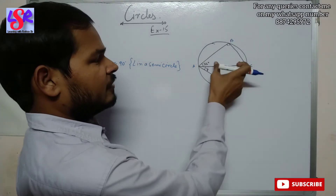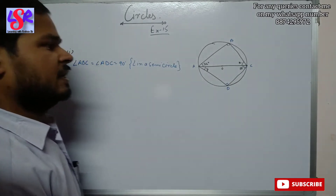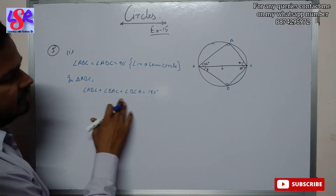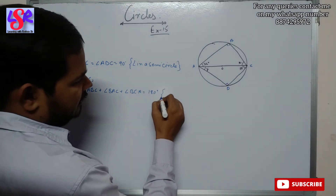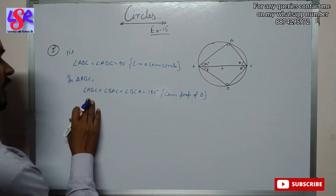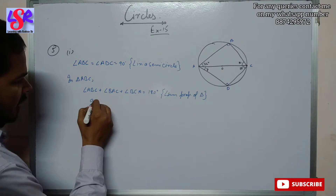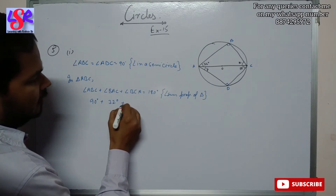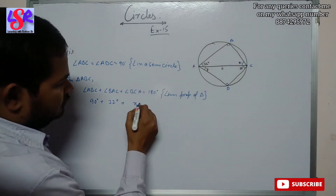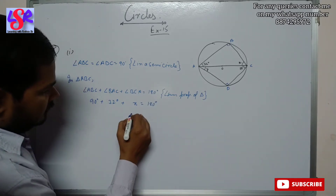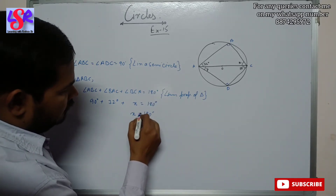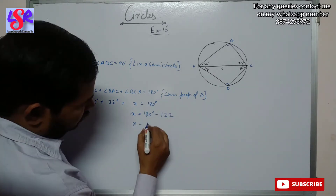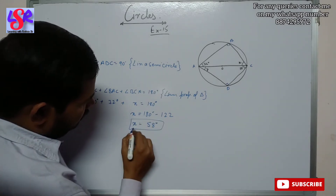In triangle ABC, we can find the value of X using the angle sum property of triangle. Angle ABC plus angle BAC plus angle BCA equals 180 degrees. We have angle ABC as 90 degrees and angle BAC as 32 degrees. So X equals 180 minus 122, giving us X equals 58 degrees.